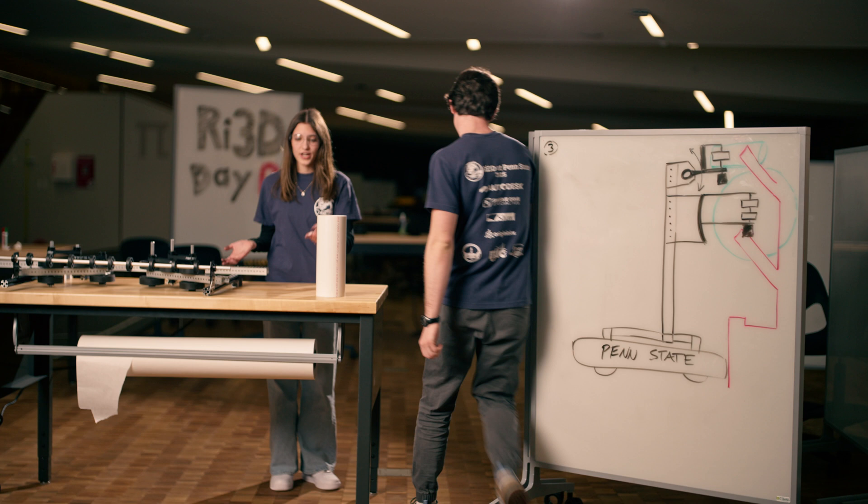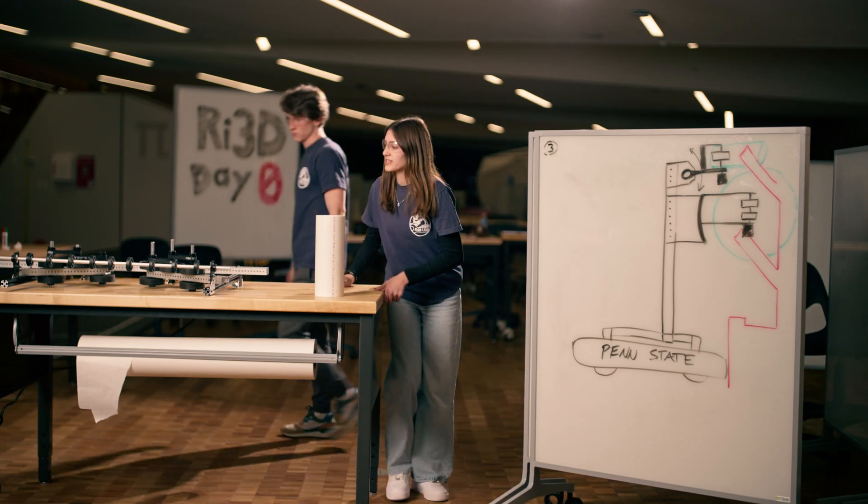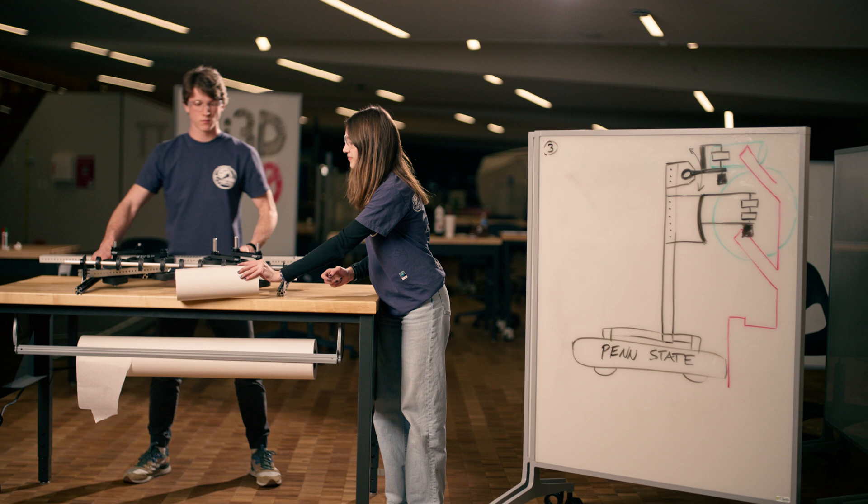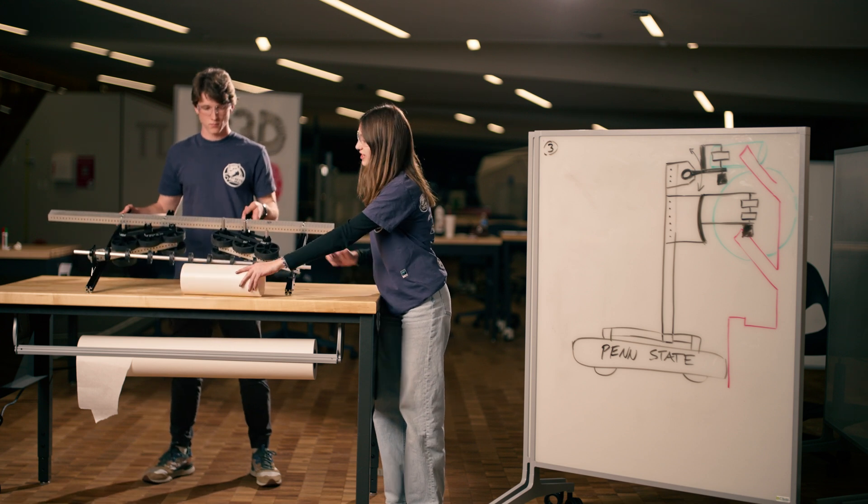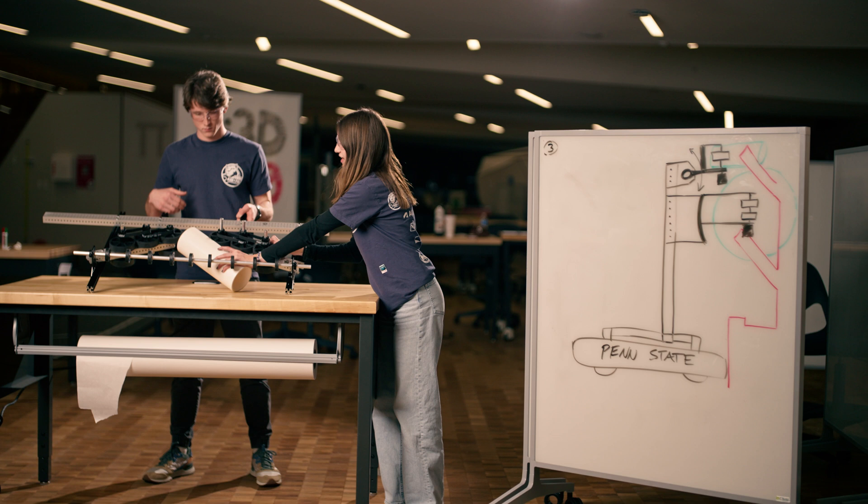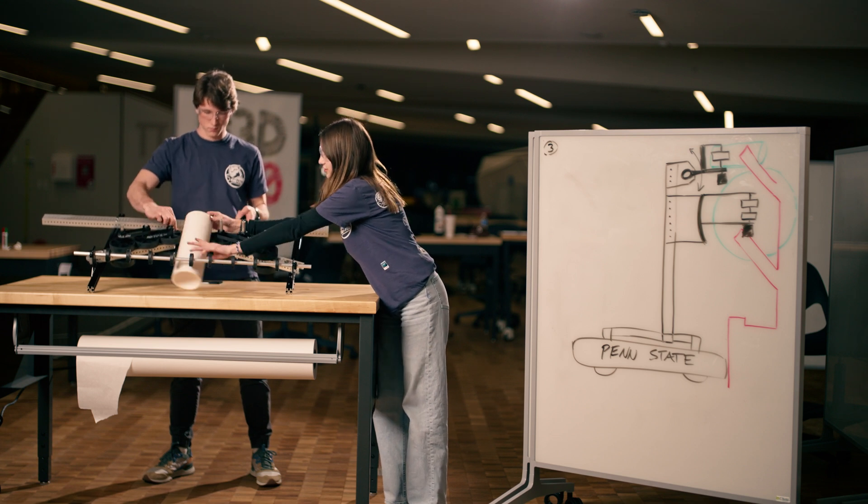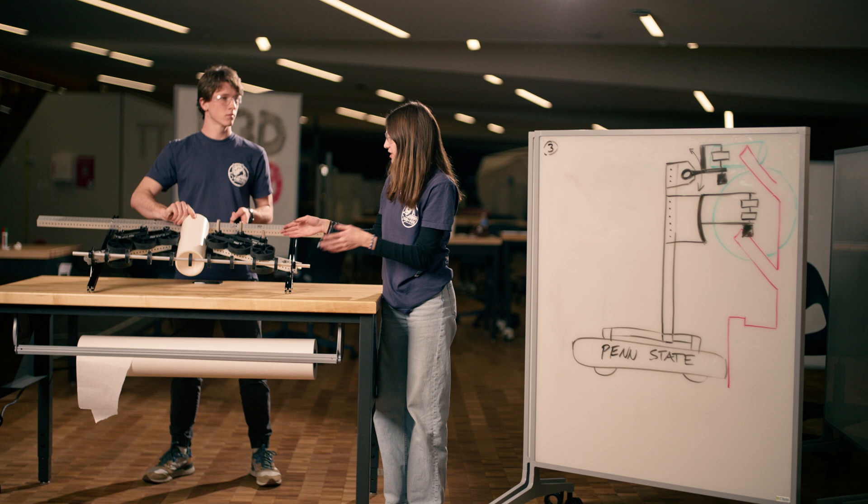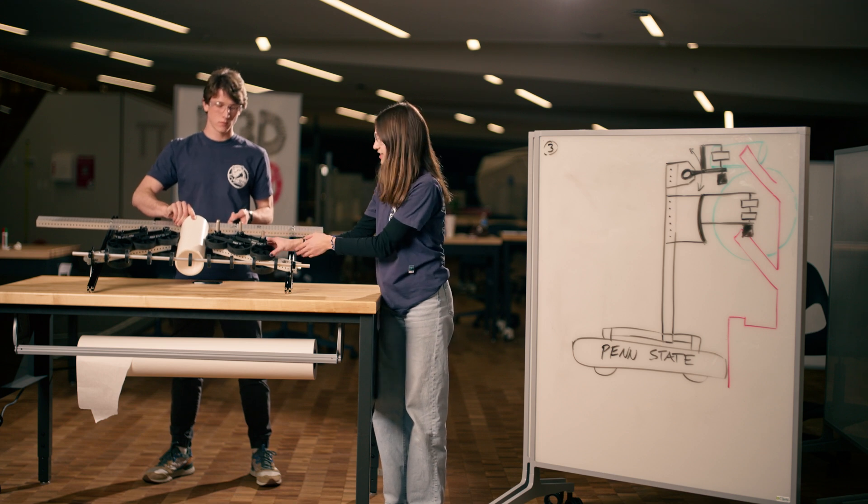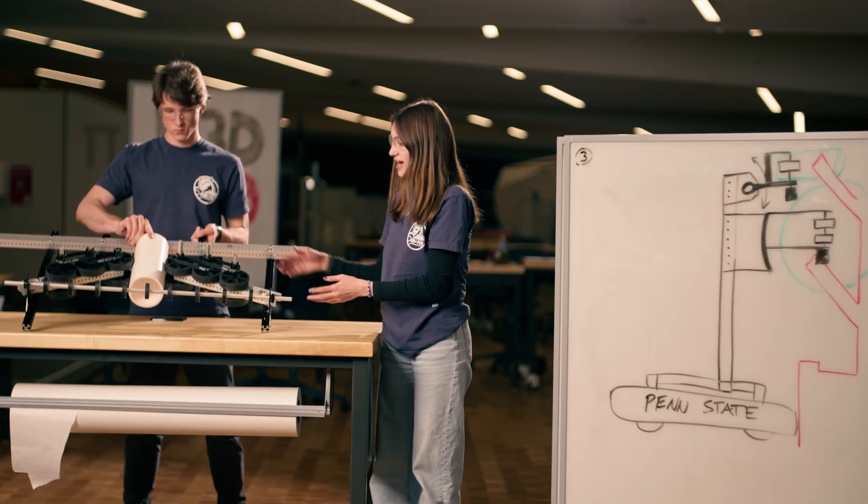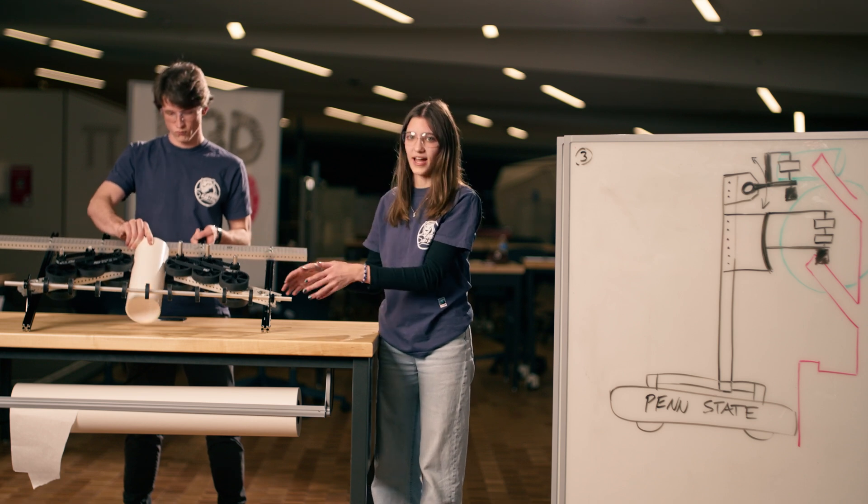Our first prototype that we did today was this one. Our goal was to intake the coral from any orientation, for this flat bar to take it in, and then these to be spinning and put it into a vertical position. Tomorrow, our goal is to make sure that in continuous motion these can keep spinning, the coral actually goes into the vertical position, and test to make sure we can actually get at it from any angle.